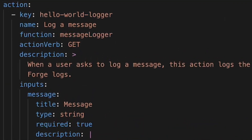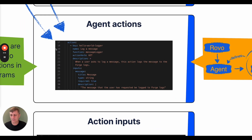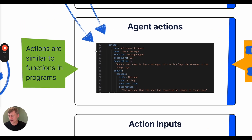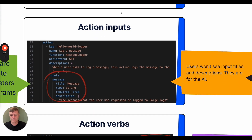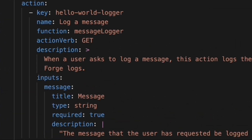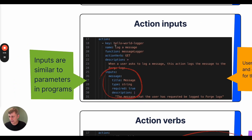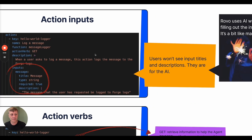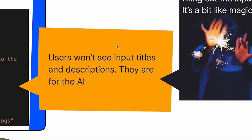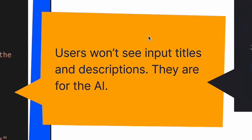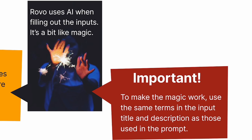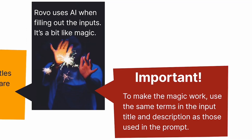The agent's prompt can reference actions that Rovo must invoke in order to manipulate or retrieve data, and a single agent can utilise multiple actions. Actions are like functions in traditional programming languages. Each action can define inputs that Rovo must provide when it is invoked — in this particular case, the input is a message that the user is requesting to log. Inputs are like function parameters in traditional programming languages. The title and description of each input is for Rovo's benefit and won't be displayed to users. Rovo matches the user's request with the prompt to work out how to fill out the action inputs — it's a bit like magic, but one important tip is to be consistent with your terminology.